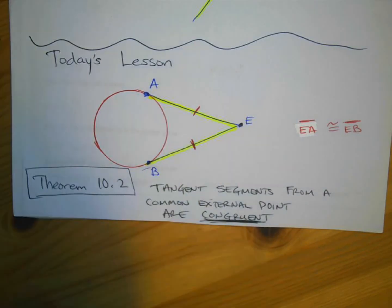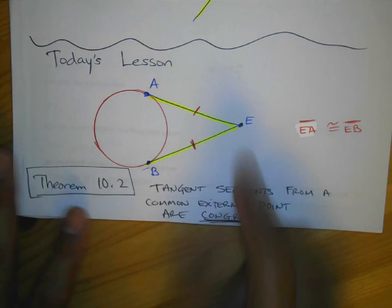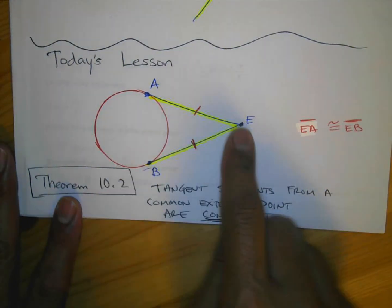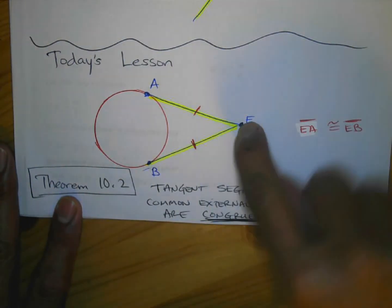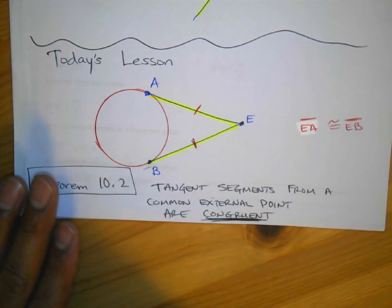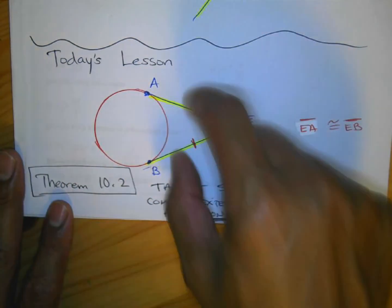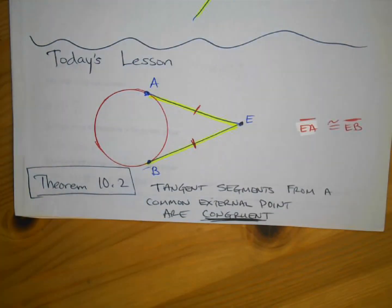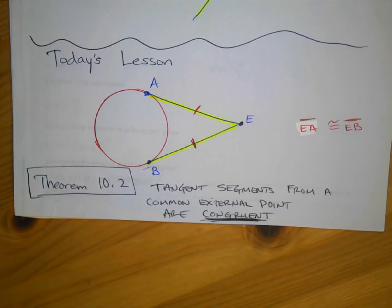So that's the lesson for today. In the next video, you'll see that if you have an external point and two tangent lines from that point to the circle, those segments are congruent. Print out the worksheet — the next file — for these parts of the notes.